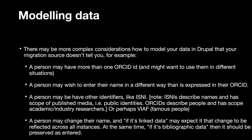The case example I want to use is how we model people. Rosie was the main driver for these considerations. For example, a person may have more than one ORCID ID and might want to use them in different situations. A person may wish to enter their name in a different way from what is expressed in their ORCID. A person may have other identifiers like ISNI — ISNIs describe names and have scope of published media and public identities, while ORCIDs describe people in general and persist across publications. As well, a person may change their name, and if it's linked data, that change may be expected to reflect across all instances. But at the same time, if it's bibliographic data, it should be persistent as it was entered.